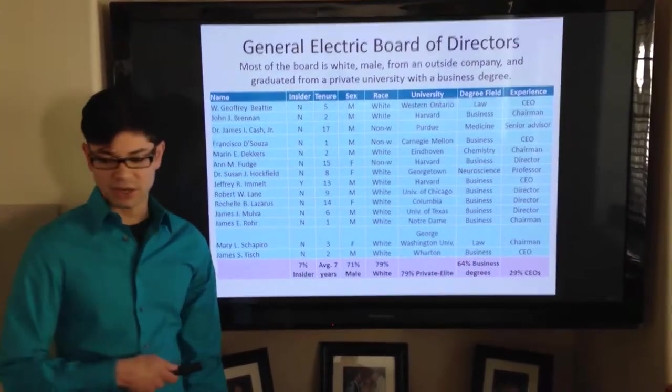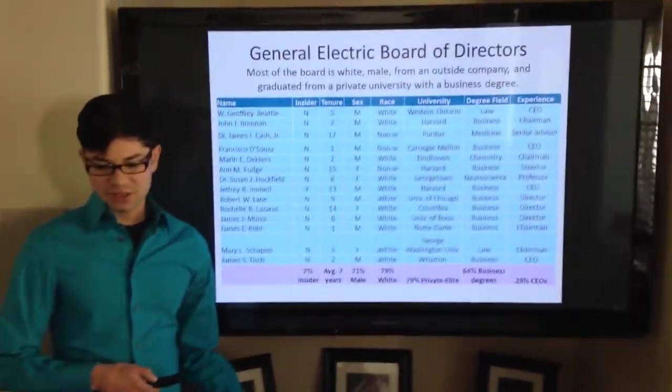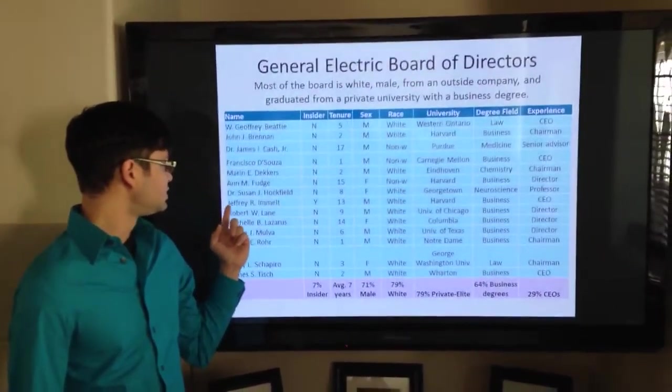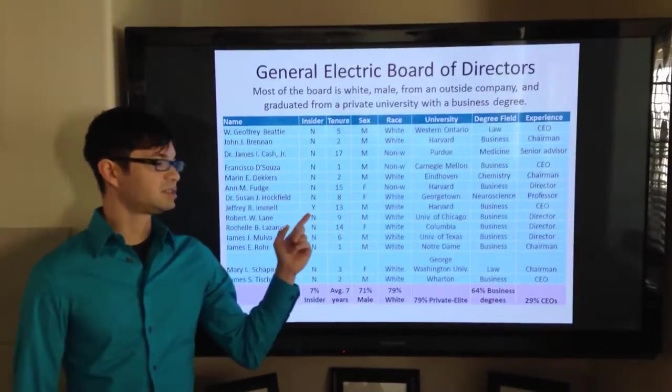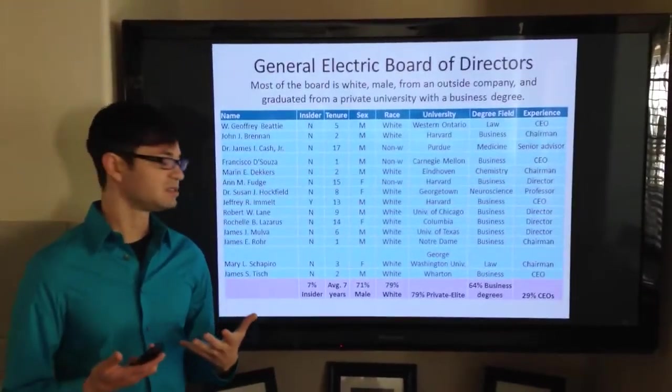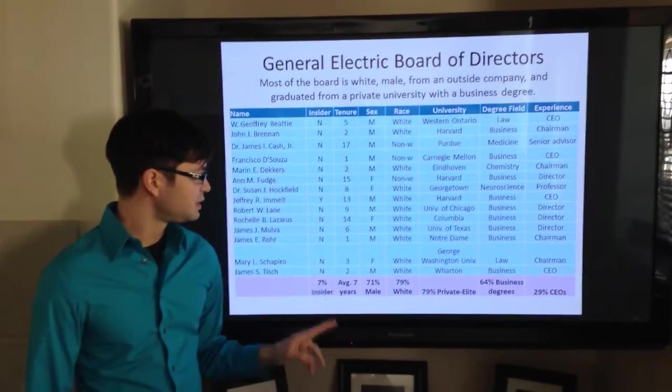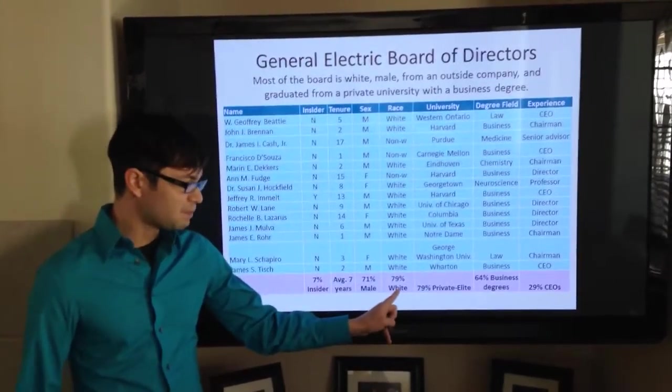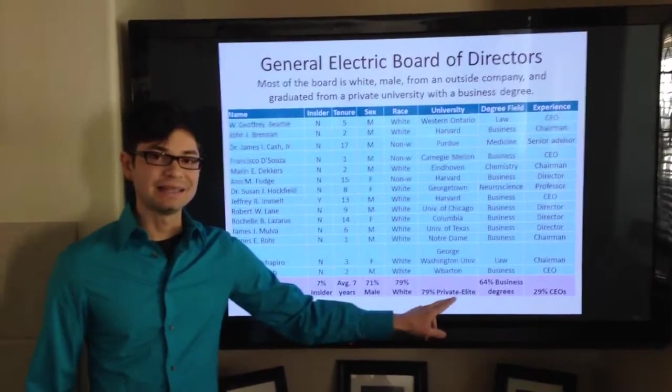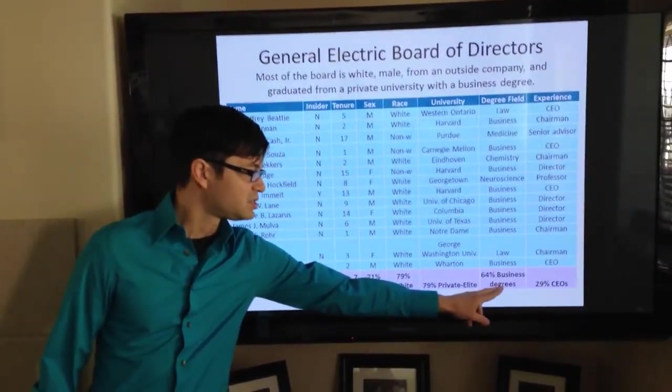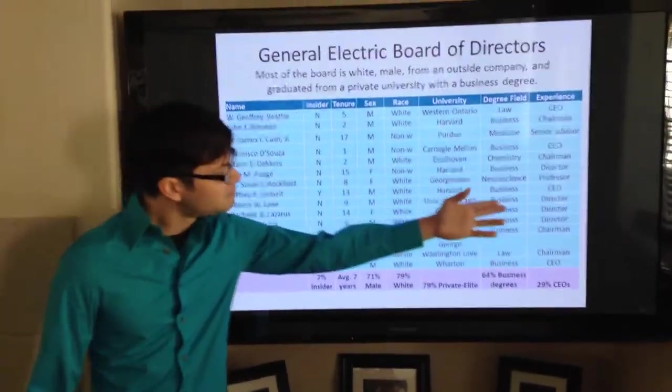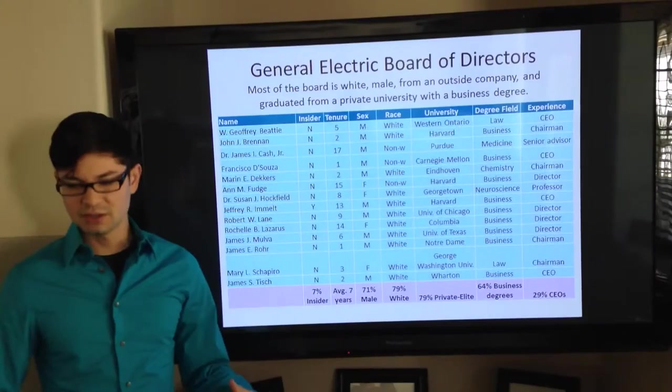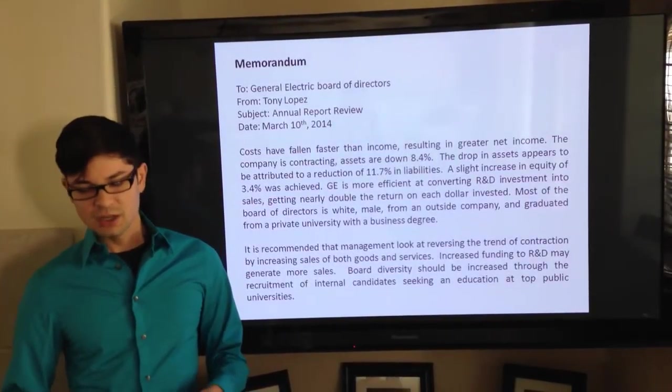Finally, this is the board of directors. 7% of them are actually insiders. Only one of them actually is an insider. That's Jeffrey Immelt, and that's the CEO. He's the only one that came from within the internal ranks of the company. On average, they have seven years of experience in the board. They're 71% male, 79% white, and they came mostly from private and elite universities with a business degree, 64%, and the largest division of these was 29% who had some sort of CEO experience.